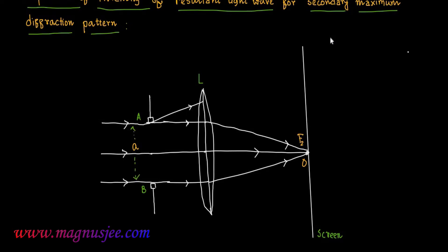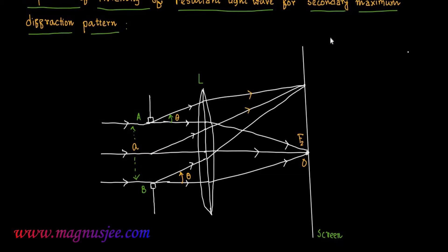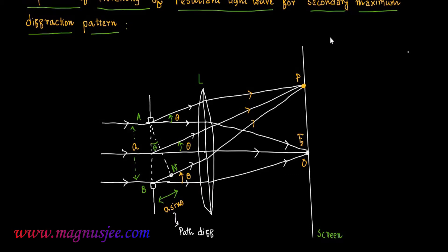Small a is the aperture width or aperture length. At the sharp corners A and B, secondary wavelengths are diffracted at an angle theta, or rays of light are deviated from their straight line path, and these secondary wavelengths will converge at the point P on the screen after refraction through the convex lens L. Theta is the angle of deviation. We draw a normal from point A on the secondary wavelet generated from point B. AN is the normal and BN is equal to a sin theta, which is the path difference between the secondary wavelengths generated from the sharp corners B and A reaching the point P.